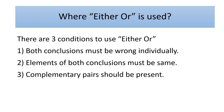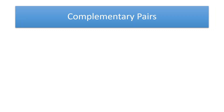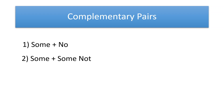The third condition is complementary pairs should be present. You might be thinking what are complementary pairs. We have three types of complementary pairs: first is some plus no, second is some plus some not, and third is all plus some not.